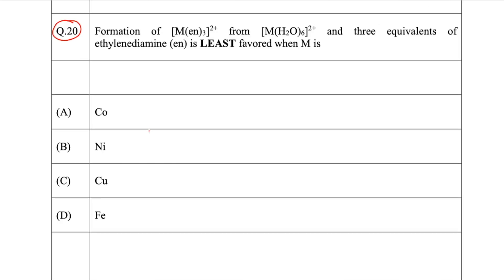In the previous answer key the answer was copper, and now the answer has been changed to iron — that is option D. This was a question where many people either gained 1.33 marks or lost 1.33 marks depending upon whether it was correct or wrong for them. So let's discuss this particular question now.